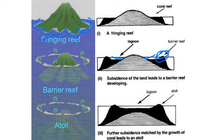Atolls are formed when an active volcano or land mass that had a fringing reef or barrier reef is totally submerged through subsidence, resulting in a complete lagoon forming in a circular shape.